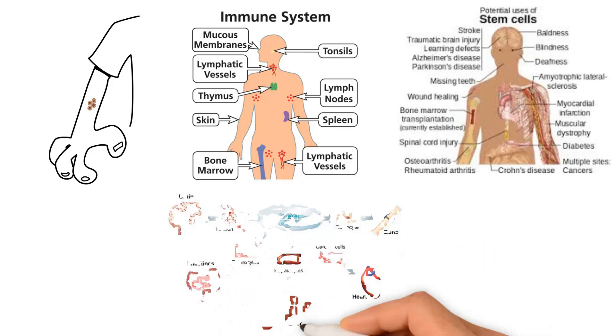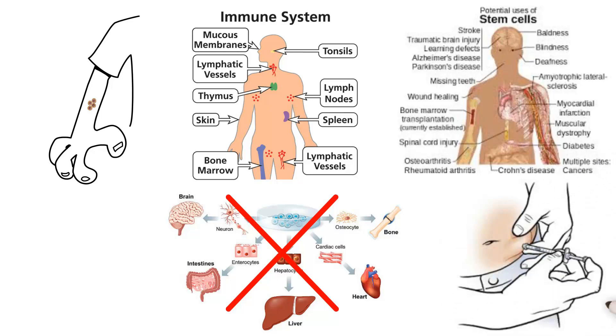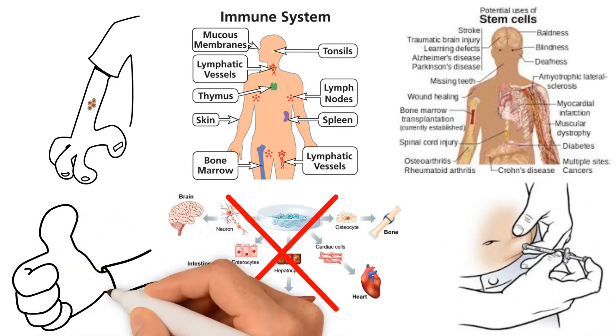One theory for the reason a body ages is the decrease in the number and proliferation of stem cells as we age. If the theory is true, injecting stem cells into the body will prolong our lives.